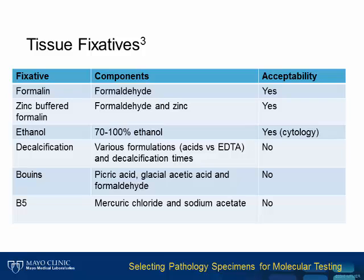Decalcification solutions are quite variable, and generally, decalcification is not acceptable. B5 and Buens are examples of fixatives that, while they have important histologic effects and uses in various subspecialties, they do create problems for molecular testing and are not acceptable.